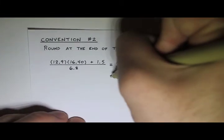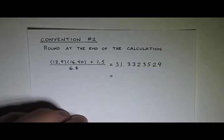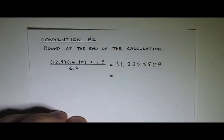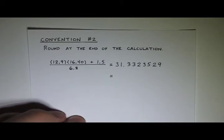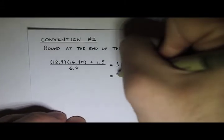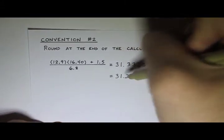And so now you could round it. You might have a convention for how you want to round. In general, I just say, if you're just doing a homework problem or trying to work out a problem that's not a lab problem, just go ahead and round it to something reasonable. Maybe 31.3 would make sense.